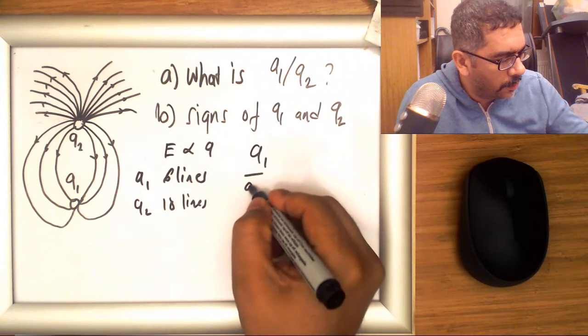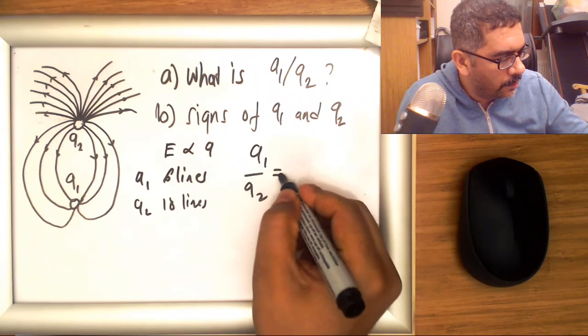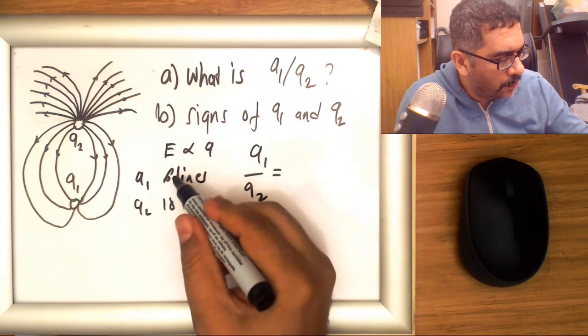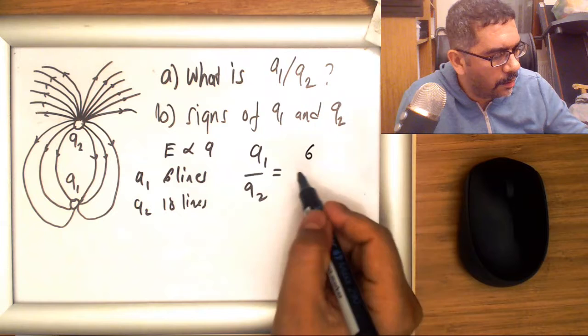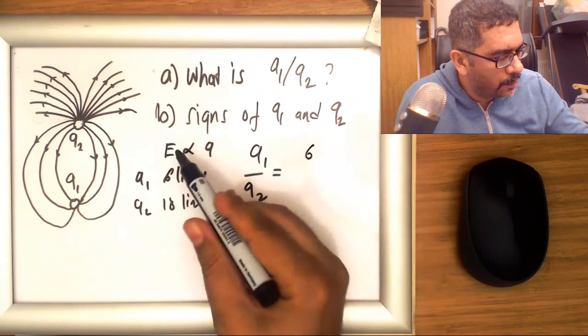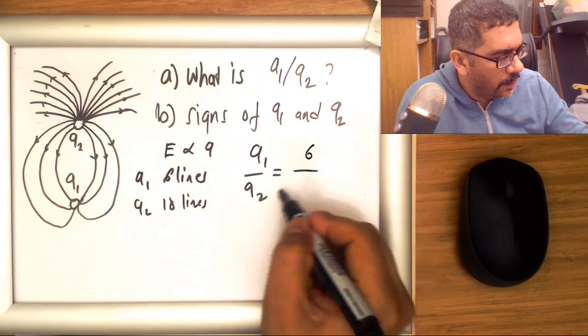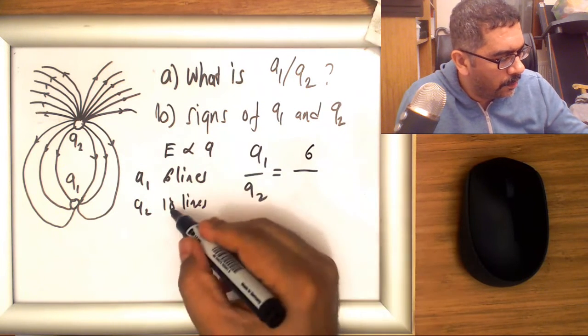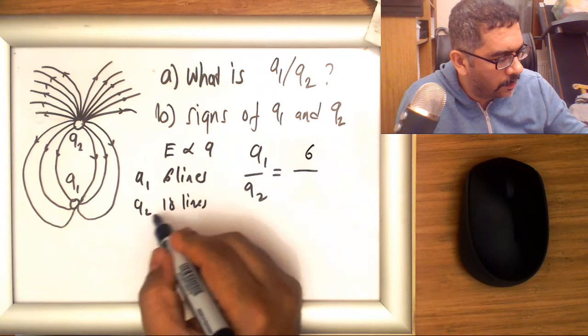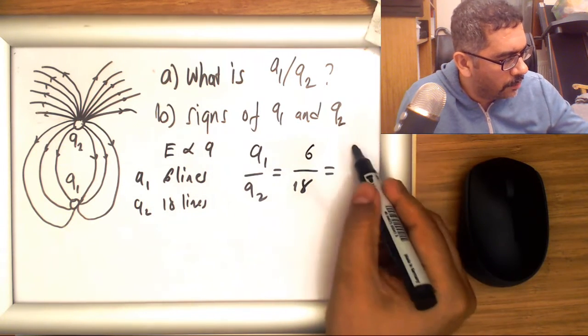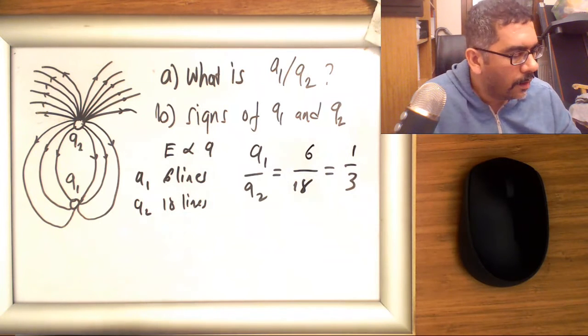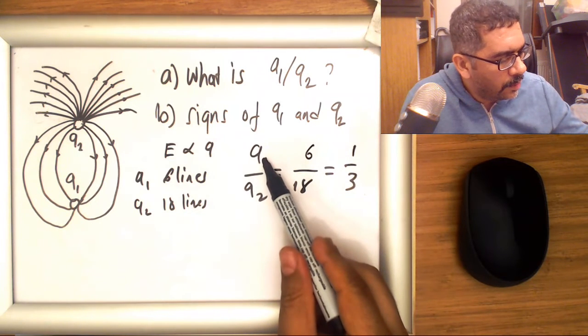q1 divided by q2, and this will be equal to—q1 has six lines, so just put the number six because this is proportional to the electric field intensity. And for q2, put the number 18 because around q2 there are 18 lines. So what you get is just one over three. So the magnitude of charge q1...